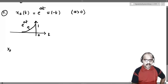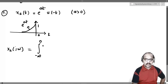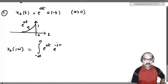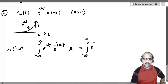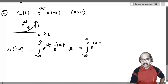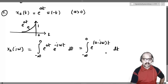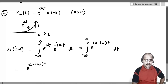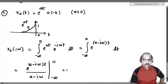Now let us assume a is greater than 0, so x2(t) is absolutely integrable and its Fourier transform exists. It is given by the integral from minus infinity to 0 — because of u(-t) — of e^(at) multiplied with e^(-jωt) dt. This simplifies to the integral of e^((a - jω)t) dt evaluated from minus infinity to 0.